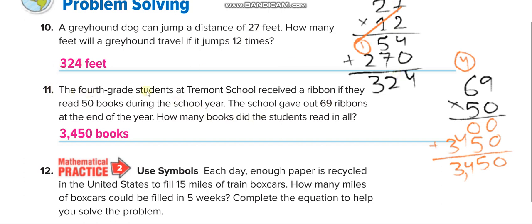The fourth grade students at Cremont School received a ribbon if they read 50 books during the school year. The school gave out 69 ribbons. So, 69 times 50. We multiply and get 3,450 books.